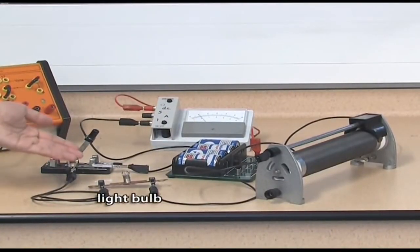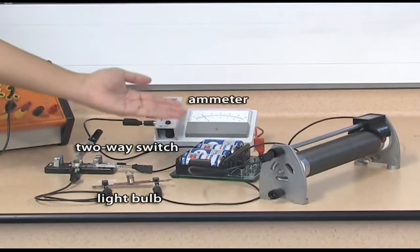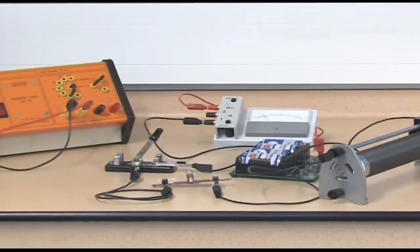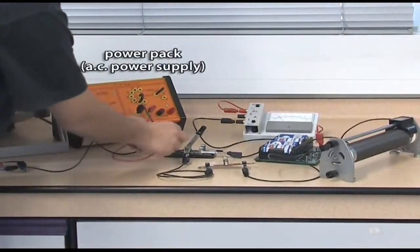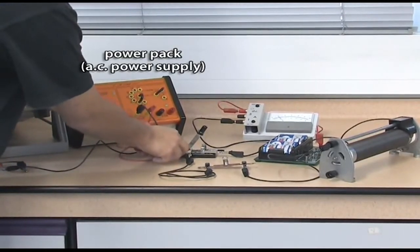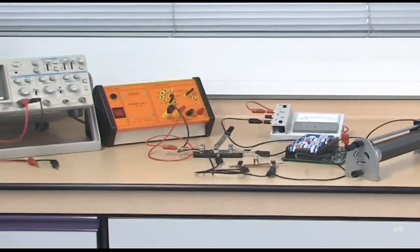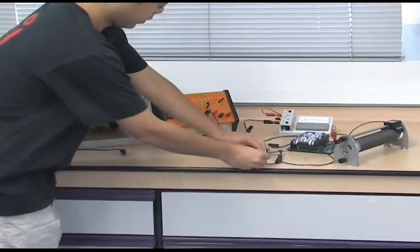Connect a light bulb in series with a two-way switch, an ammeter, a battery box, and a rheostat. The light bulb and the two-way switch are connected to an AC power supply at the same time. Finally, connect a CRO across the two ends of the light bulb.